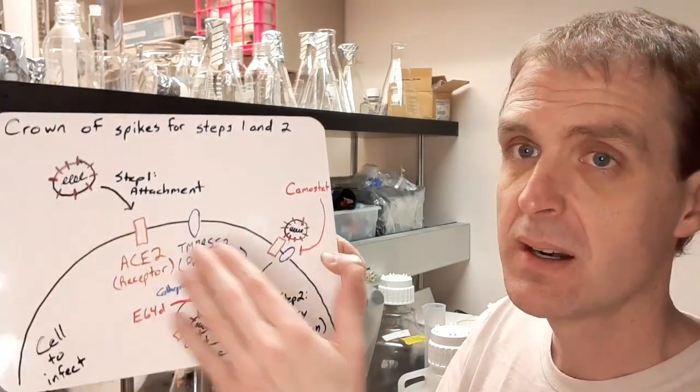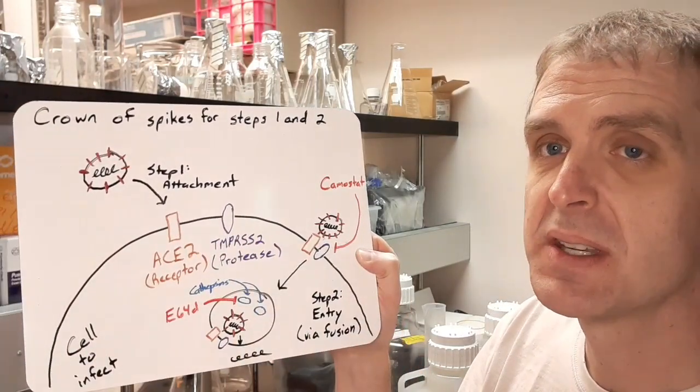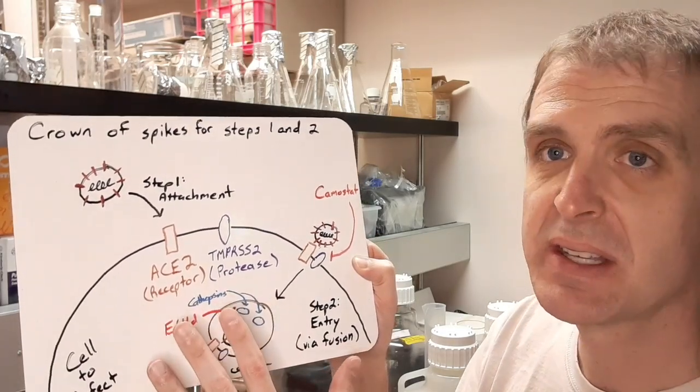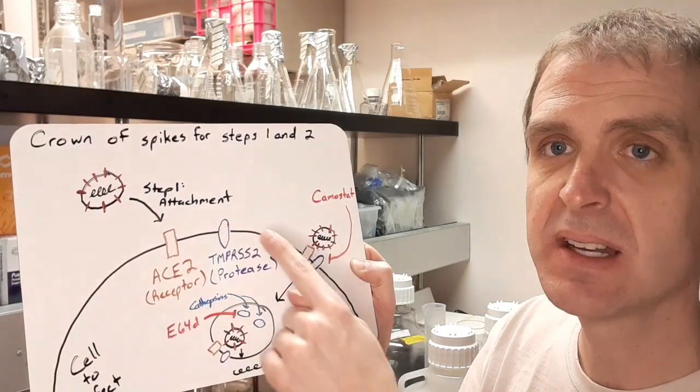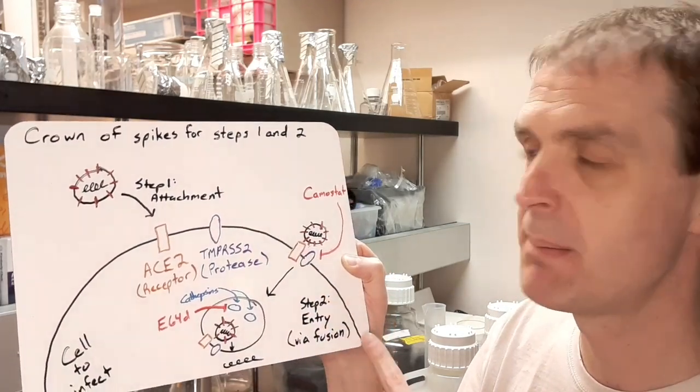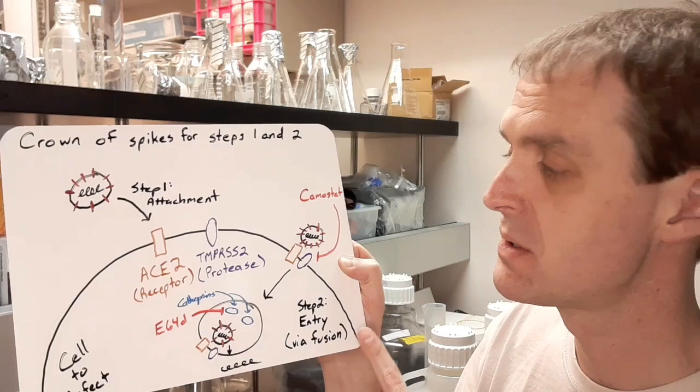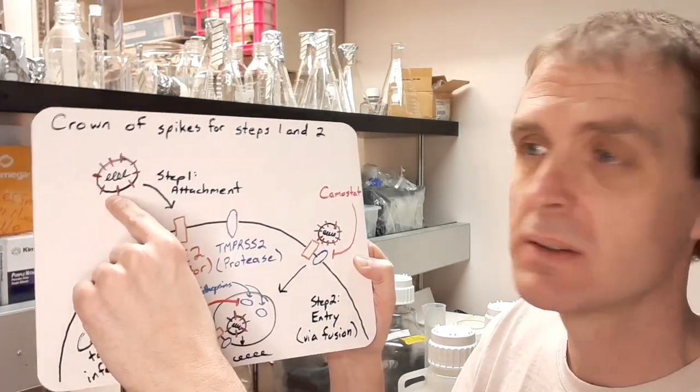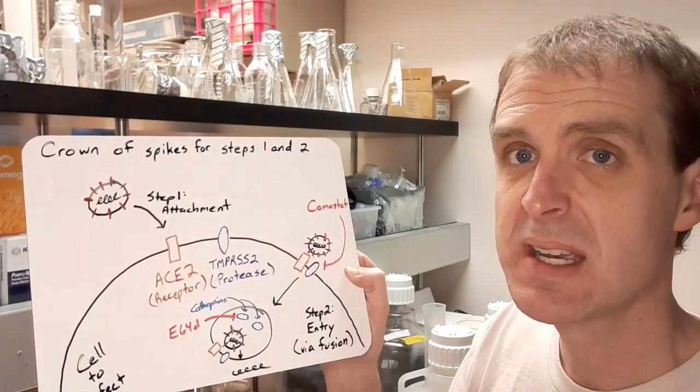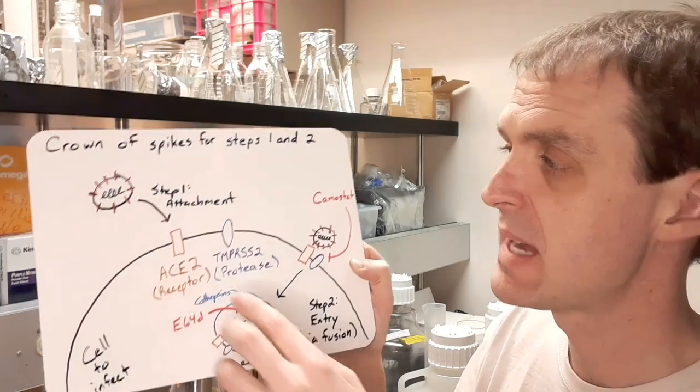Down here, what takes up the majority of this image is a cell that's going to be infected with the coronavirus. I used a black line again to indicate the membrane of the cell. So the cell has membrane, the virus has membrane, these are lipids, and they can fuse together if the right conditions happen.